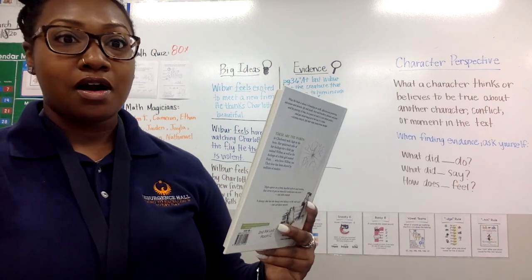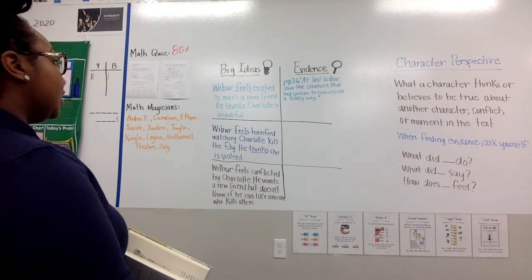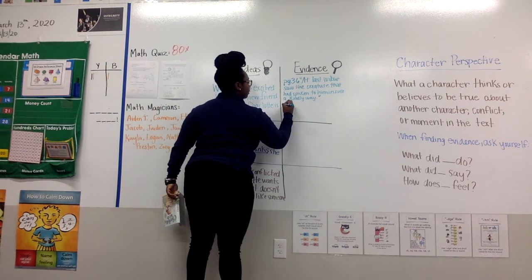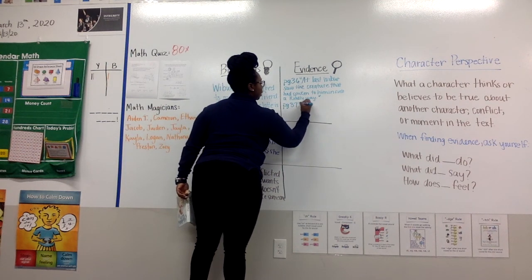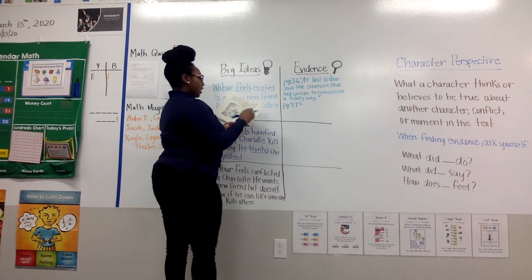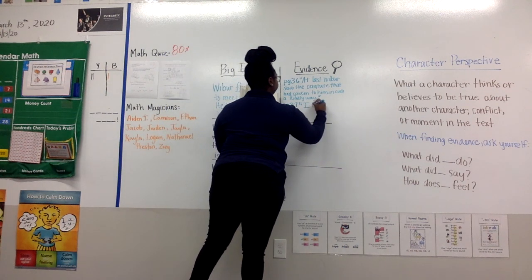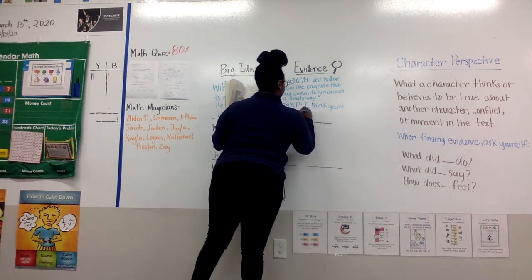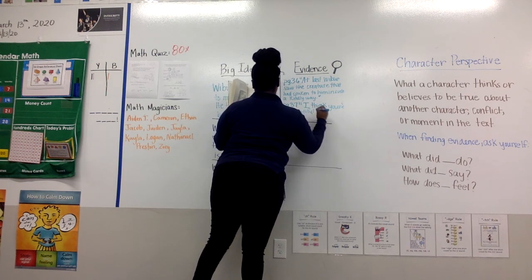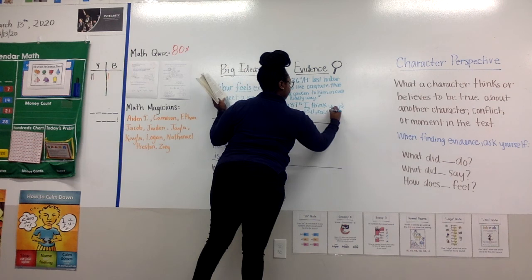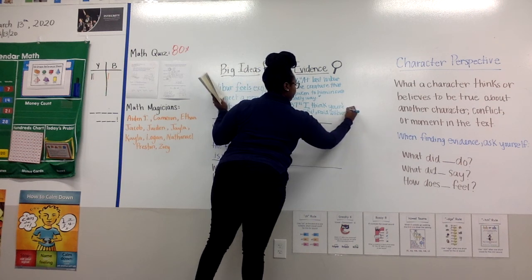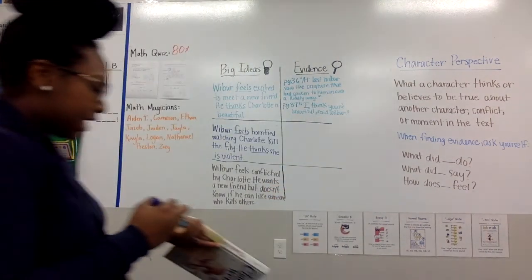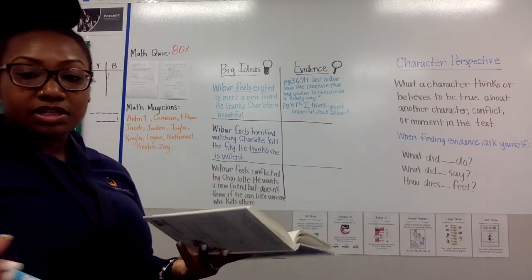'I think you're beautiful.' I found another piece of evidence. Big idea — evidence. He thinks Charlotte is beautiful. Here's my next piece of evidence on page 37. I'm going to make sure that I put my quotation marks and look right in the book for my evidence. 'I think you're beautiful,' said Wilbur. Those are our two pieces of evidence for our first big idea: Wilbur feels excited that he's meeting his new friend and he thinks that Charlotte is beautiful.